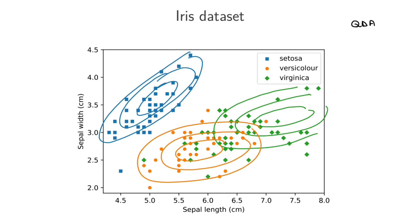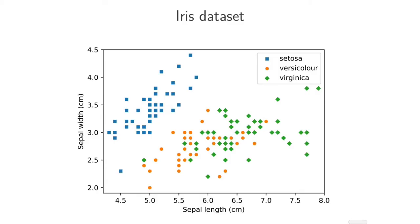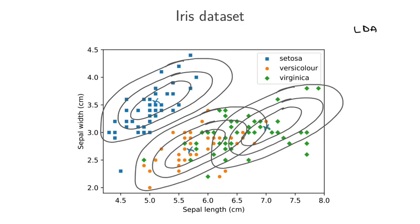With linear discriminant analysis, there would be a single shared covariance matrix for all three classes, meaning the Gaussians would have the same orientation and slant, but different mean vectors — one for blue, one for green, one for orange. All data points contribute to the single covariance estimate. The Gaussians would share the same shape but be centered at different locations.